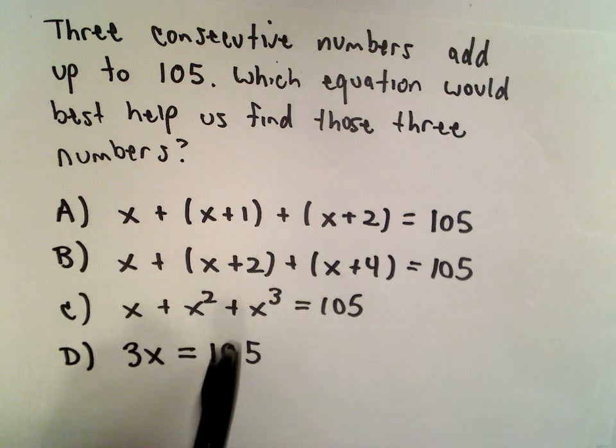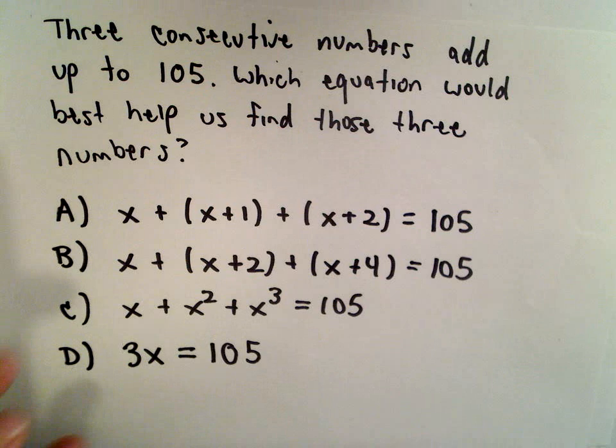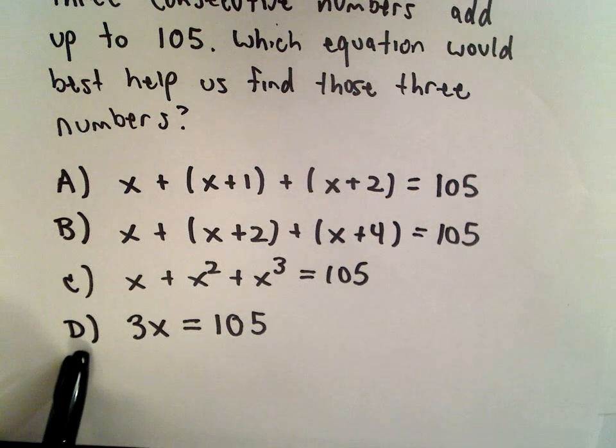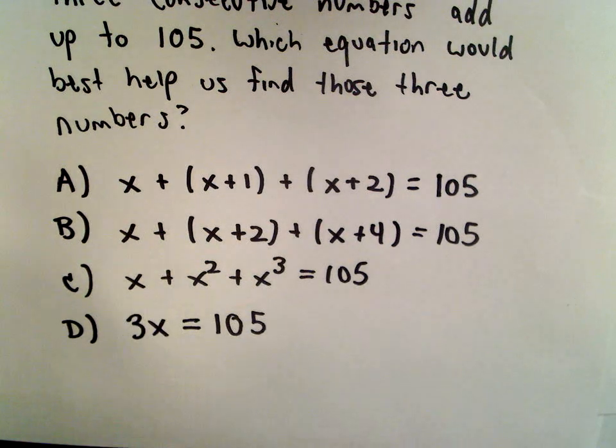Answer choice C is x plus x squared plus x to the third equals 105. And lastly, answer choice D is 3 times x equals 105.